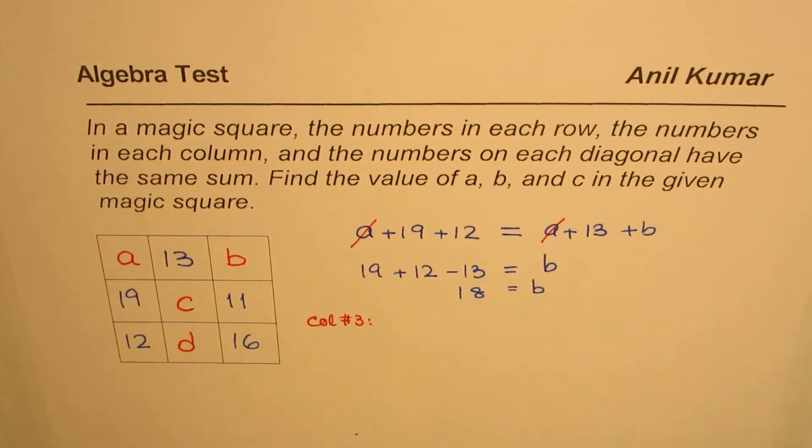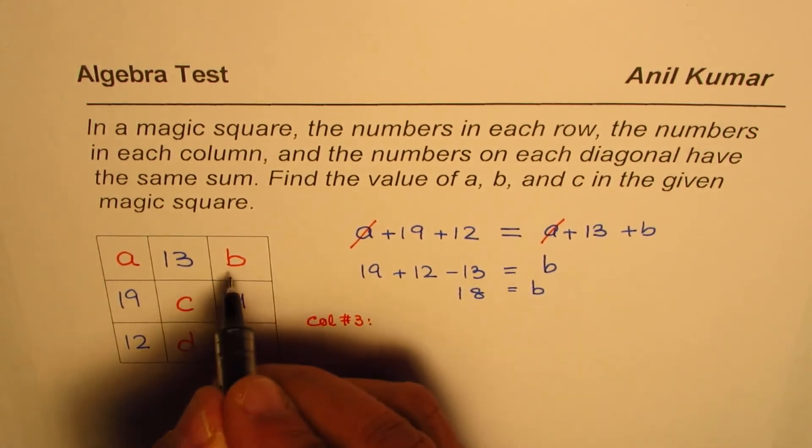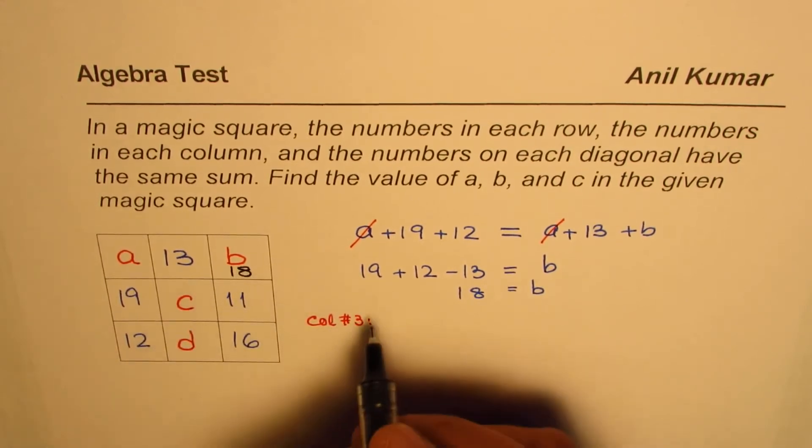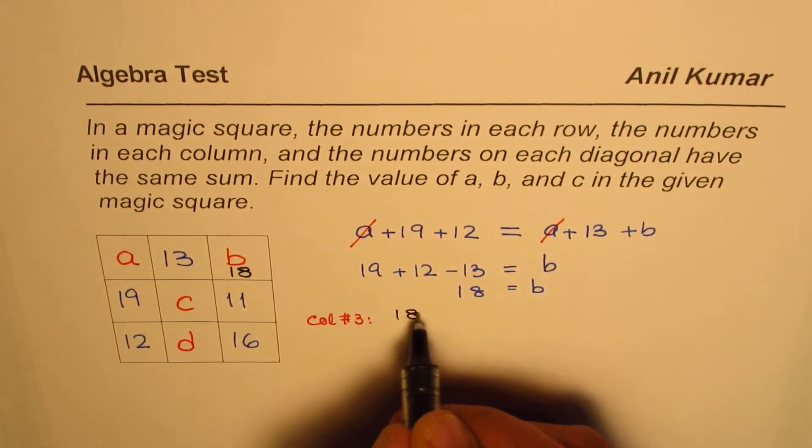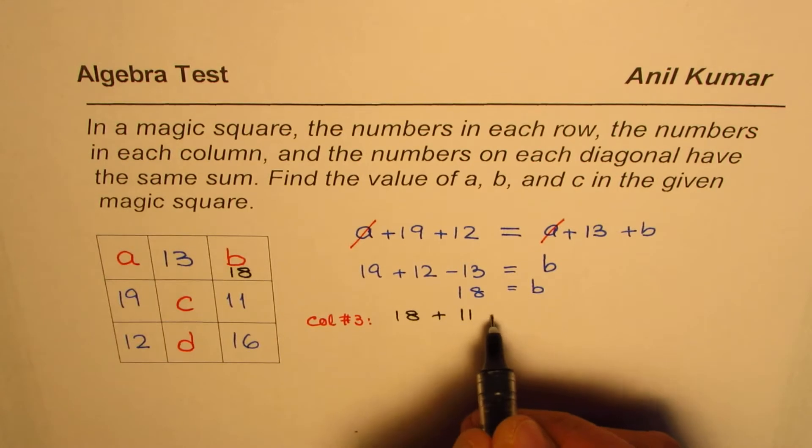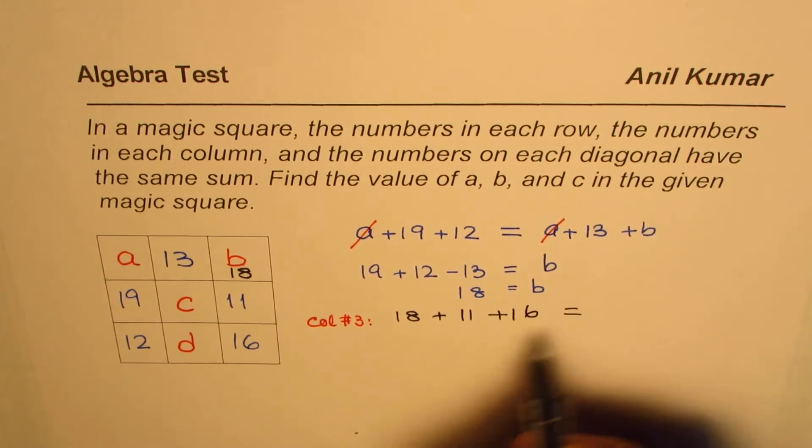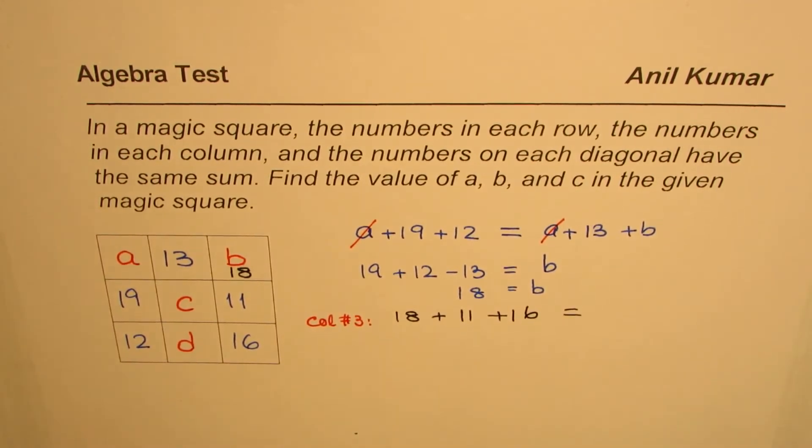Sum of this column is, we will write B as 18. We got this as 18. So it is 18 plus 11 plus 16, that becomes the sum of this column.